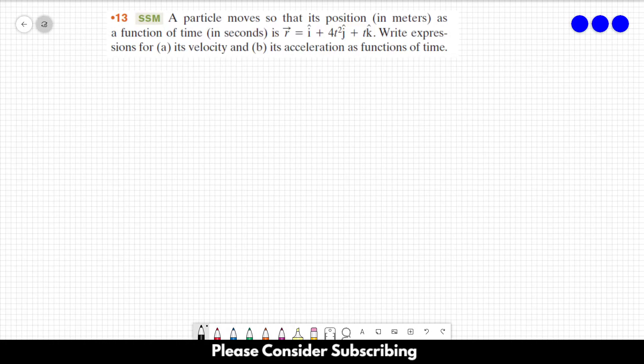Number 13, a particle moves so that its position in meters as a function of time in seconds is vector r. Let's write it down. Vector r, which is a function of time, is equal to i plus 4t squared in the j direction.